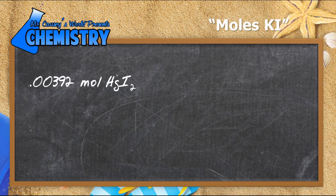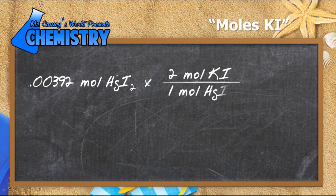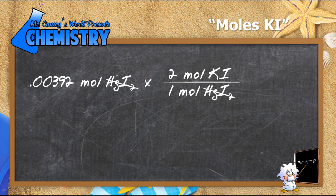Now let's change it to moles of potassium iodide. I multiply by the mole ratio and cross out my units. Always check your dimensional analysis — when you do your unit analysis, you want to be sure you've set it up right. That gives me moles of potassium iodide, which is what I wanted. Plug and chug, and there's my value.